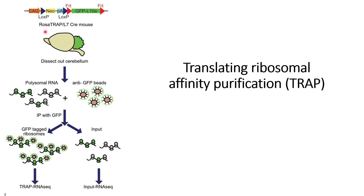When this plasmid is transfected into cells, and we isolate the GFP signal, we can obtain ribosomes or polysome RNAs in which the large subunit of the ribosome contains this GFP-L10a protein.